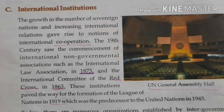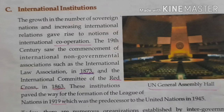The growth in the number of civilized nations and increasing international relations gave rise to international cooperation. International institutions were set up in the 19th century, beginning with the International Law Association in 1873 and the Red Cross Committee in 1863. These institutions paved the way for the formation of the League of Nations in 1919, which was a precursor to the United Nations in 1945.